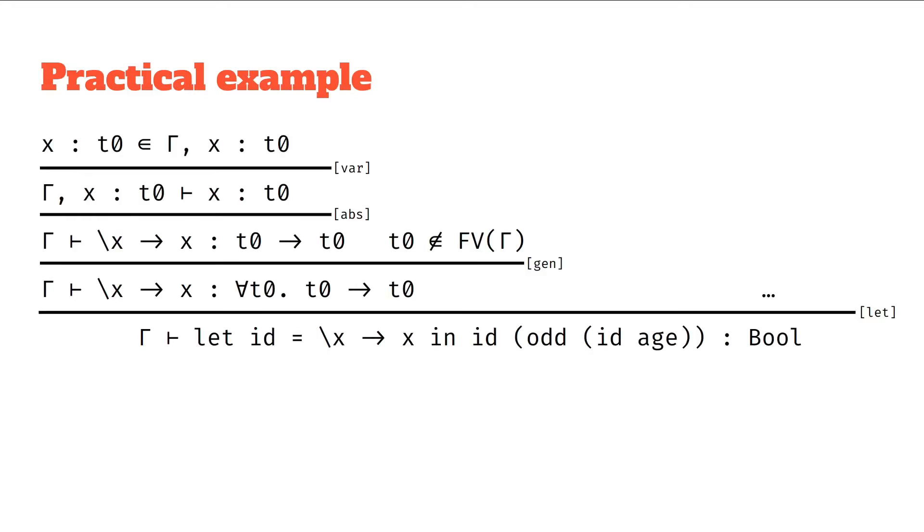So this is what the proof looks like. At the bottom here we have a let statement, so I've used the let rule. We've got on the left the type for backslash x to x, and you'll find if you just use a monotype here, so for example t0 to t0, it doesn't quite work, because when you then try and work out the right hand side of the tree, when you work on unifying all the constraints.